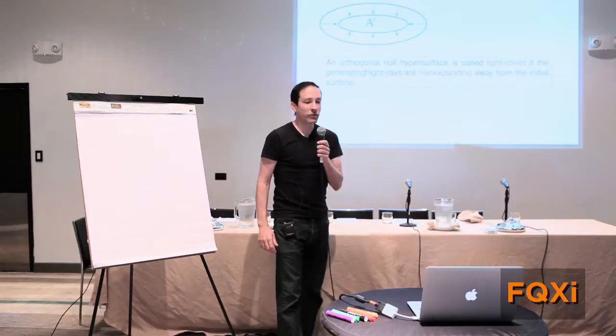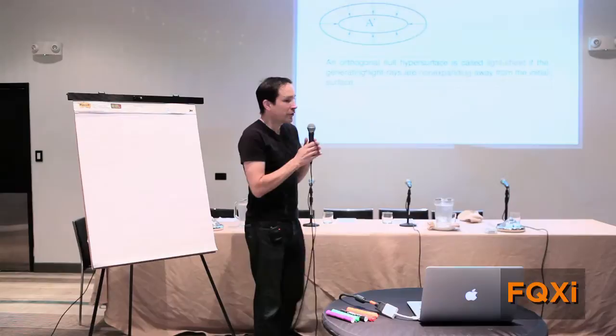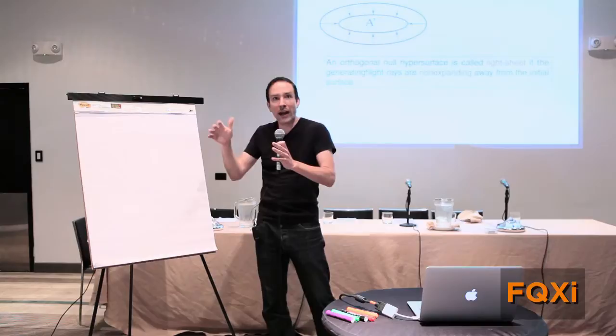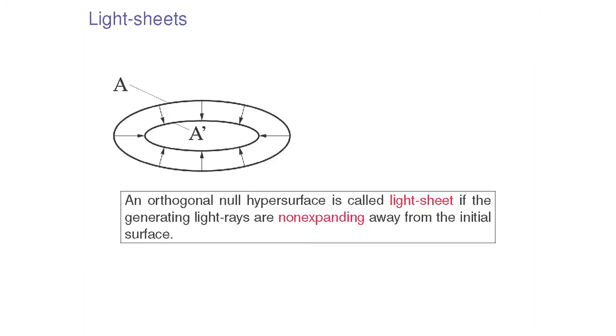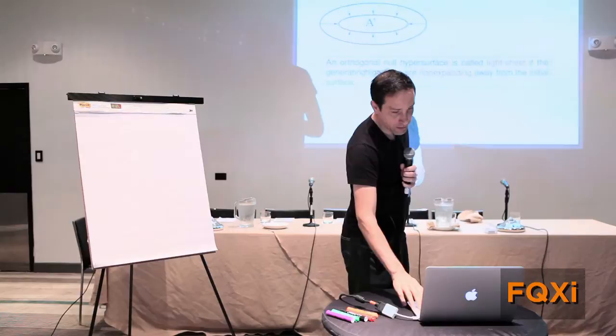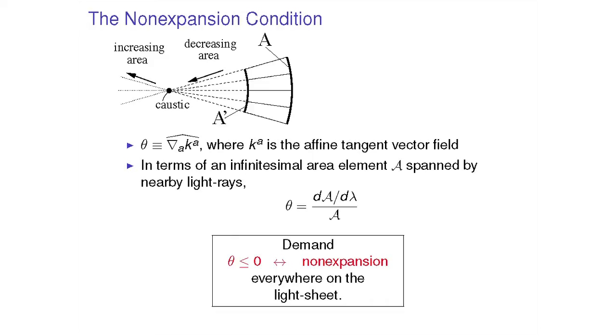And I need one more thing to tell you what a light sheet is. A light sheet is not just any null hypersurface orthogonal to the original surface of area A. You have to pick out of these four directions, you have to pick ones which have the area contracting as you go away from the original surface. So here's an example, some elliptic-shaped original surface. I've kind of projected out the time direction here. I'm just looking at how the size of the thing changes as you follow the light rays away from it, and you see it's getting smaller. That will make a nice light sheet. So the generating light rays have to be non-expanding away from the initial surface, and you can encode that in the mathematical statement that theta, the expansion of the congruence, has to be non-positive.